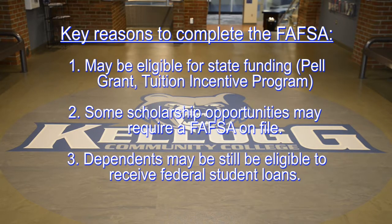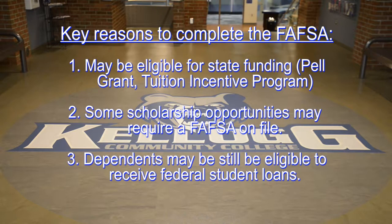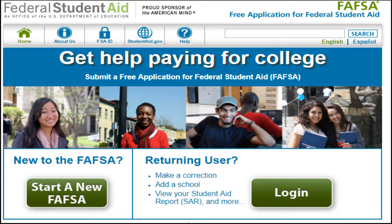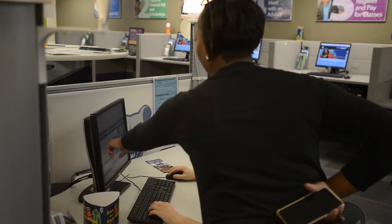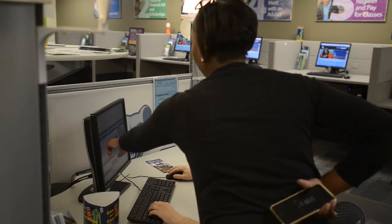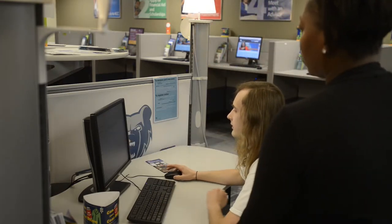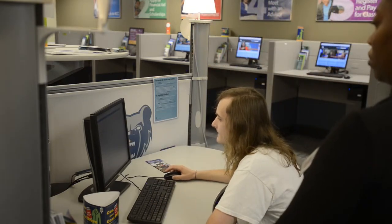Additionally, if you're a dependent, you may still be eligible to receive federal student loans regardless of your parent or legal guardian's income. To complete the FAFSA, visit FAFSA.ed.gov. You, or if you're a dependent, you and a legal guardian will need to create an FSA ID and password to log in and sign your FAFSA at the end. Current students may complete the FAFSA now for the current academic year. For students attending KCC next year, next year's FAFSA will be available October 1st.